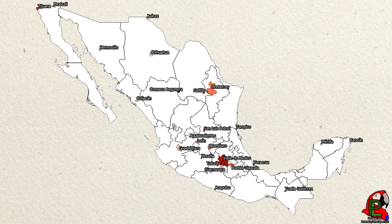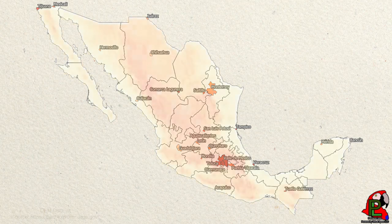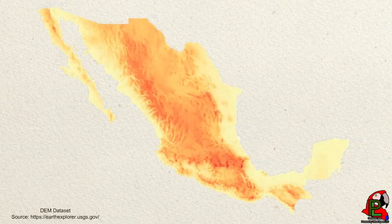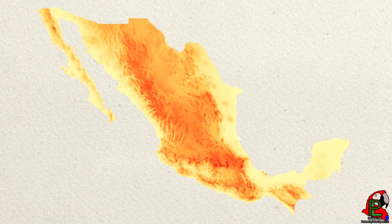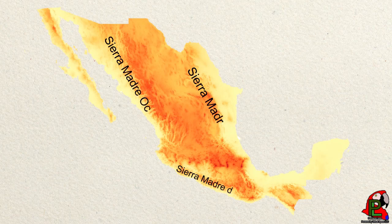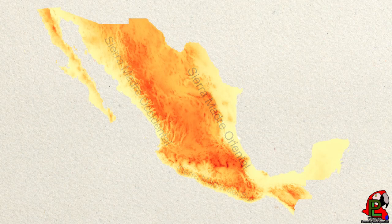Looking at Mexico's physical geography, a DEM dataset will show how mountainous Mexico is, as we can see the various elevations across the country. Most notably of these features are the Sierras stretching throughout the country north to south. Most of Mexico's highest elevations are in the central part of the nation.